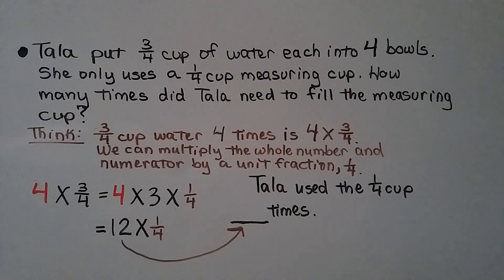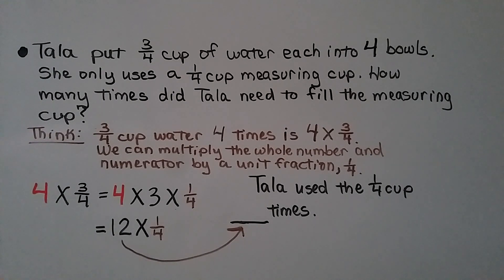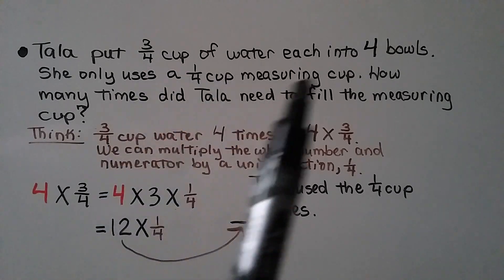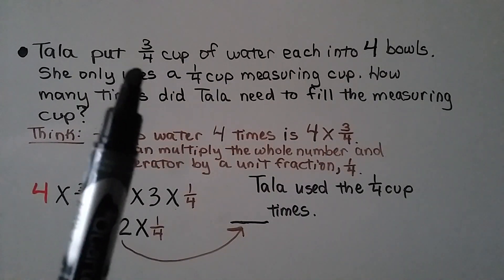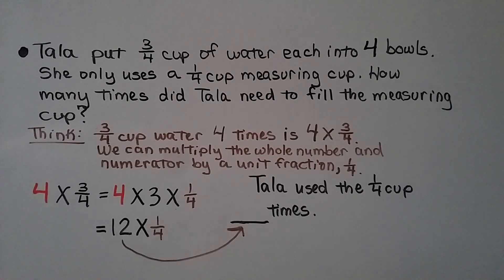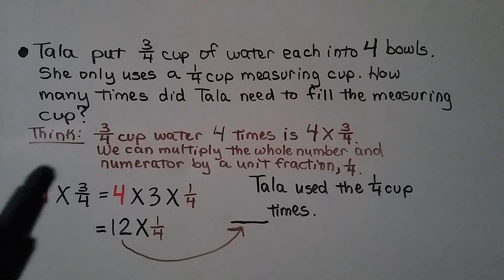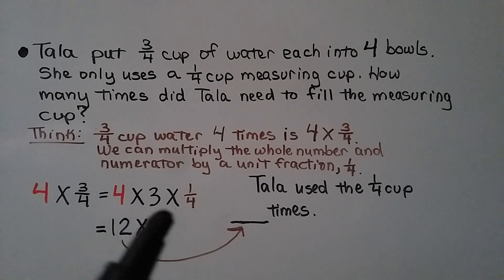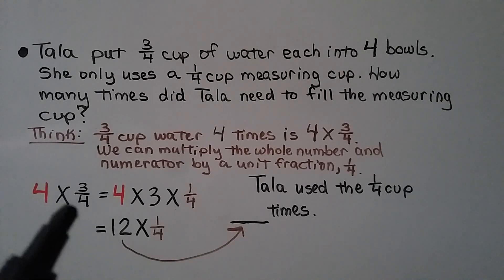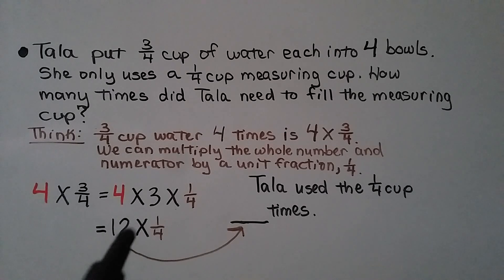Tala put 3/4 cups of water each into 4 bowls, using only a 1/4-cup measuring cup. How many times did Tala need to fill the measuring cup? She did 3/4 cup 4 times, so we calculate 4 times 3/4. We multiply the whole number and numerator: 4 times 3 is 12 times 1/4. That means Tala used the 1/4 cup 12 times.